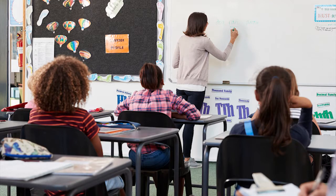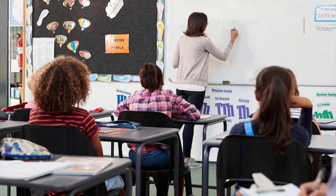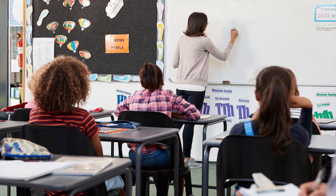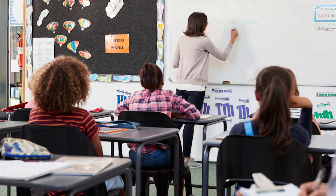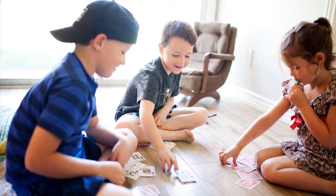Knowing our students' academic levels allows us to develop tasks that match these levels and help our students to attend for longer periods. Another key idea is establishing a structured and predictable classroom environment. When there are clear routines, expectations, and physical structure, our students can more easily anticipate where their attention is likely needed.